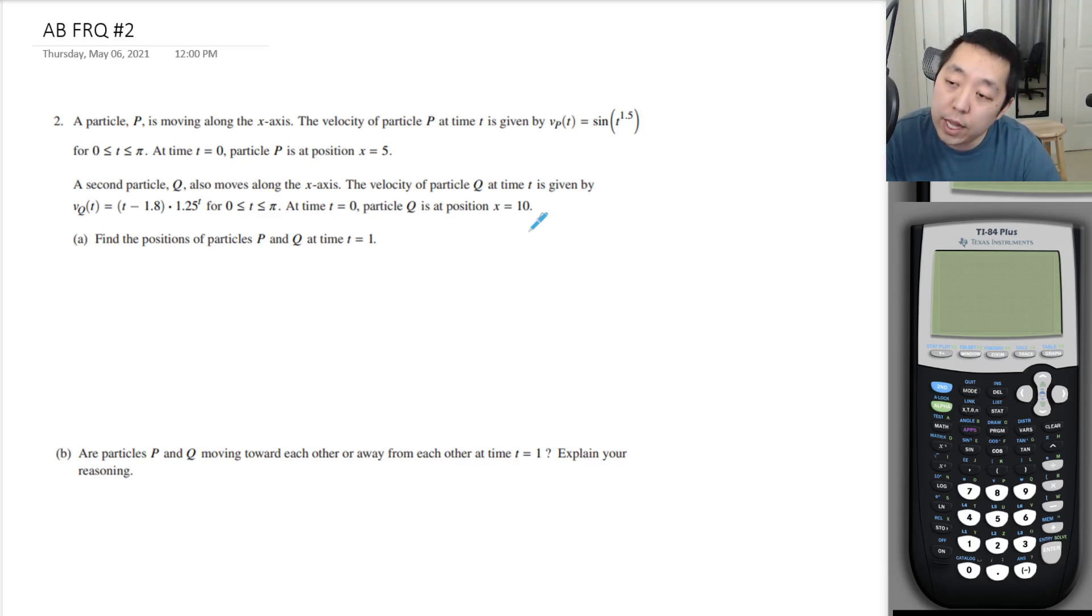Particle P is moving along the x-axis. The velocity of the particle at time t is given by the equation. At time t equals 0, the particle P is at position x equals 5, so xP(0) = 5.